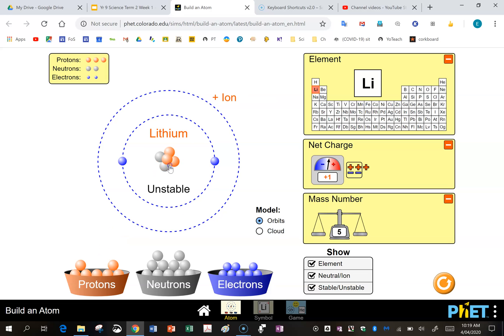We'll put in another proton to take us to lithium. Now if you look at a periodic table, lithium's mass number is 7. So I'm going to throw in two more neutrons to take the mass number to 7. Lithium is the third element in the periodic table, which means it needs three electrons. So I'm going to pick up an electron and I'm going to try and put it into the first shell. Nope, it won't let us. That's because the first shell can only have two electrons.